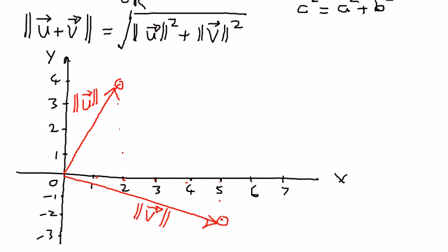And by joining these two by a dotted line, we can see that this length, if I call this point A and this point B, the line segment AB will be the magnitude of vector U plus vector V.